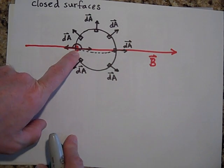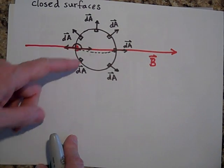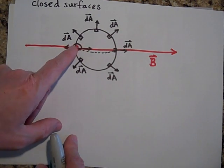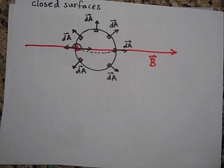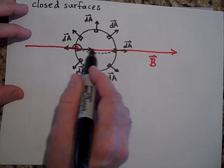Your DA is outward and your B is that way, so the angle between those two vectors is 180 degrees. If you take the cosine of 180 degrees, that gives you negative one. So basically you count the lines going in as negative and the lines coming out as positive.